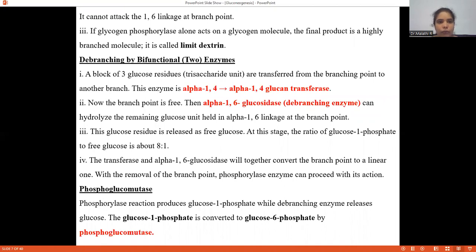Once the branching point is nearer, this glycogen phosphorylase cannot attack the 1,6 linkage at the branch point. So the glycogen phosphorylase can act only on the alpha-1,4 linkage.